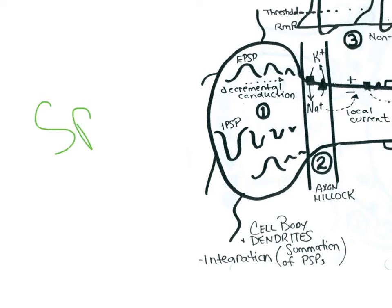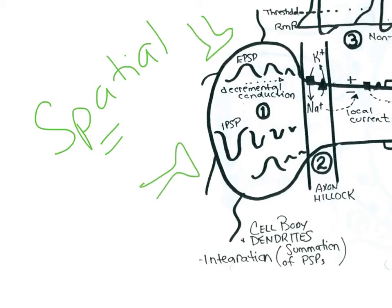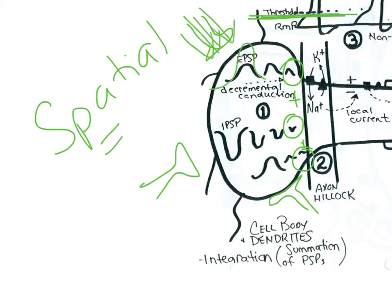In addition to temporal summation we could also have spatial summation. Here we have three neurons stimulating one cell at different locations. When you have multiple stimulations, we add up the net result of all of these. In this case it looks like we have two EPSPs and an IPSP, so the end result would be a depolarization — the question is whether it is above threshold or not. A cell firing very quickly would make its EPSP larger, while one firing slowly would produce a smaller EPSP. Both spatial and temporal summation are occurring in the integration of these graded responses in the cell body.